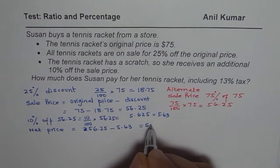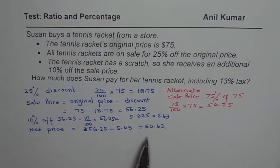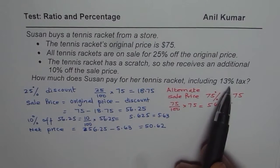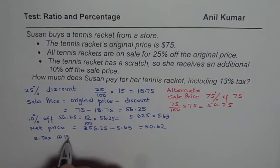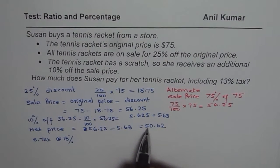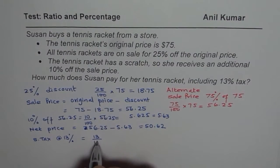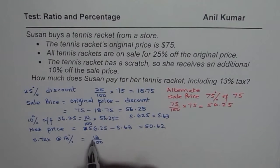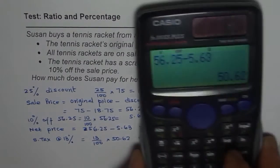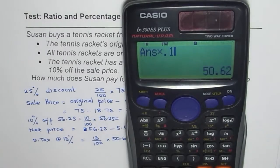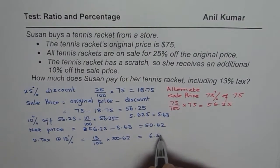So we get a net price of $50.62 — all values are in dollars. On this price, you have to pay the sales tax, which is 13%. So sales tax = 13% of $50.62, which means 13/100, or 0.13, times 50.62. Multiplying 50.62 by 0.13 gives us $6.58. So the tax is $6.58.